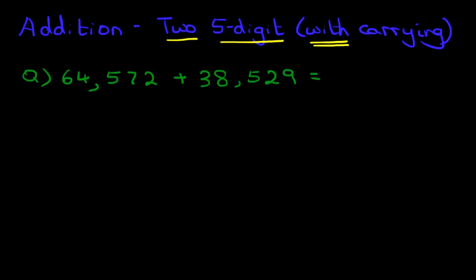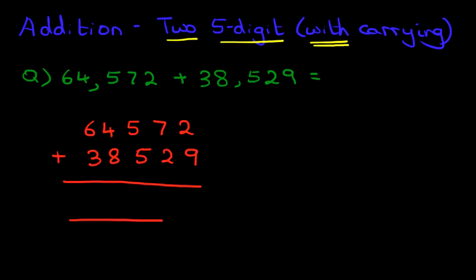Our first step is to rewrite the question in the vertical format. So let's do that over here. We have 64,572 plus 38,529. Let's put a nice big equal sign. The key to this, as we have said all the way through, is to make sure you write these down in nice, neat columns. Let's label the columns as well. We have the units, tens, hundreds, thousands, and TTH, which is the ten thousands.